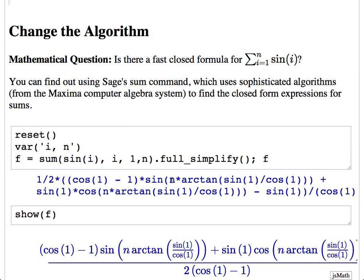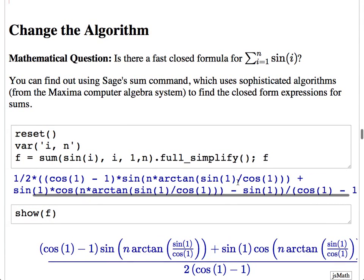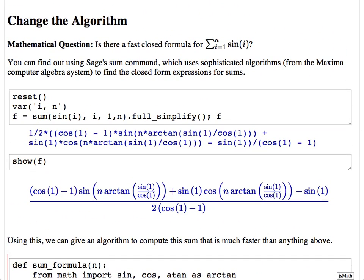Now the final thing we're going to do with this example is change the algorithm. If this were just the sum of the first n integers, you'd know there's a closed-form formula: the sum from i=1 to n of i equals n(n+1)/2. Similarly, you might not know it, but there is a closed-form formula for f(n) as well — for the sum of sin(i) from 1 to n. Without thinking about it at all, you can find this formula in Sage, because Sage can do that sort of thing.